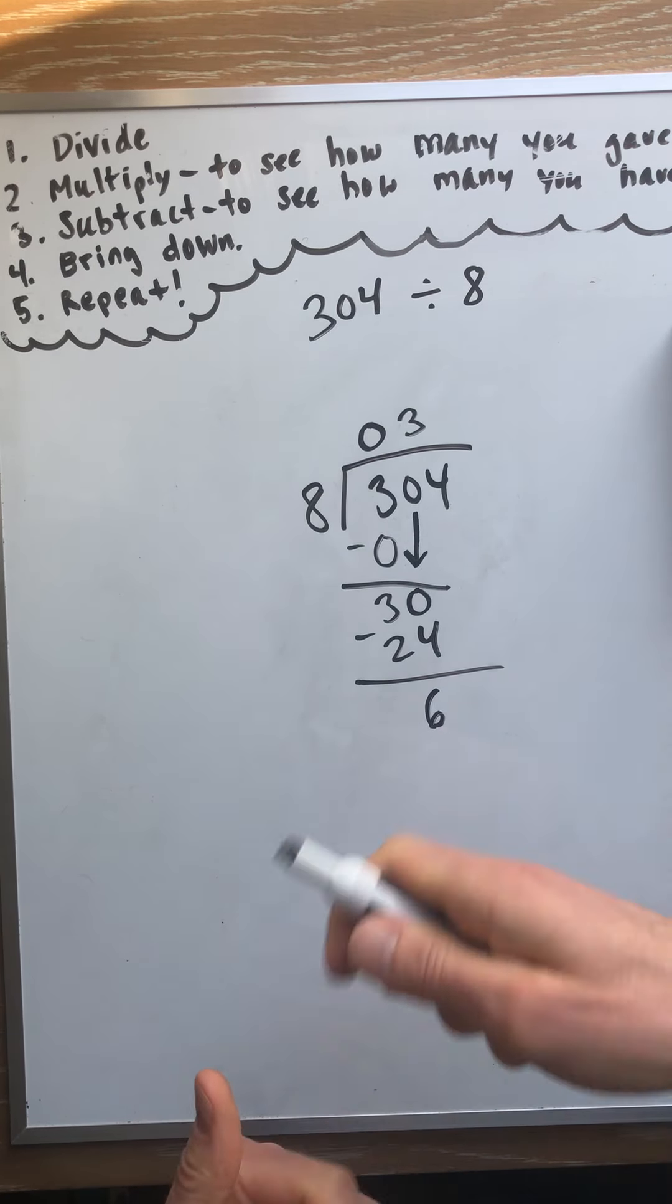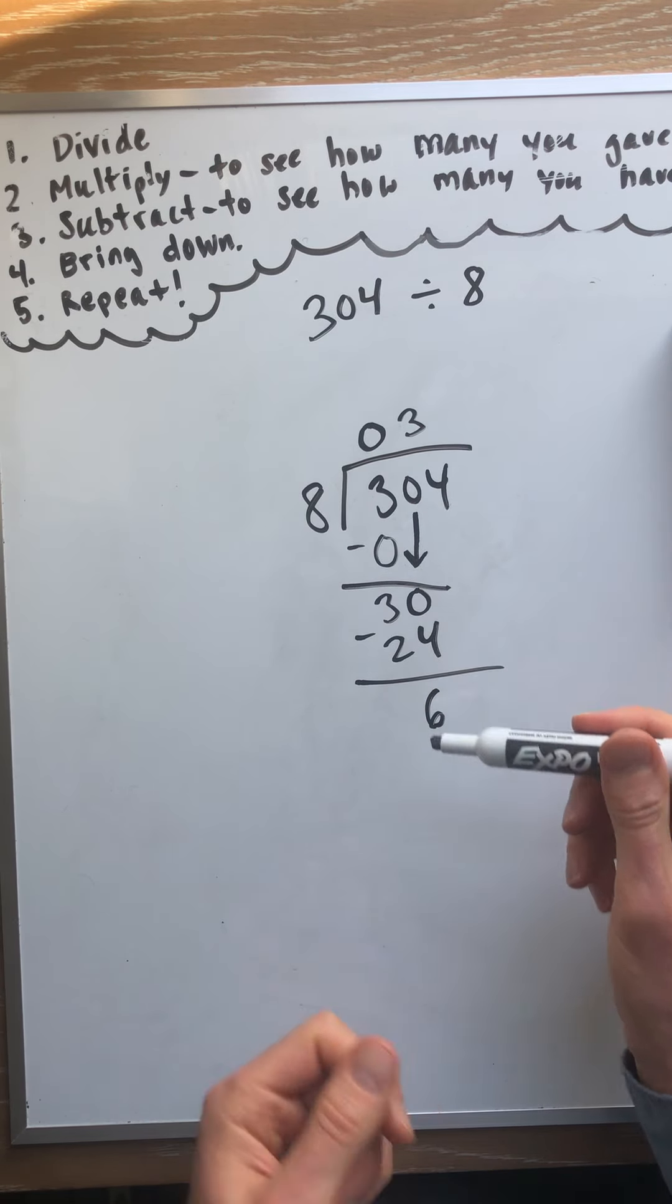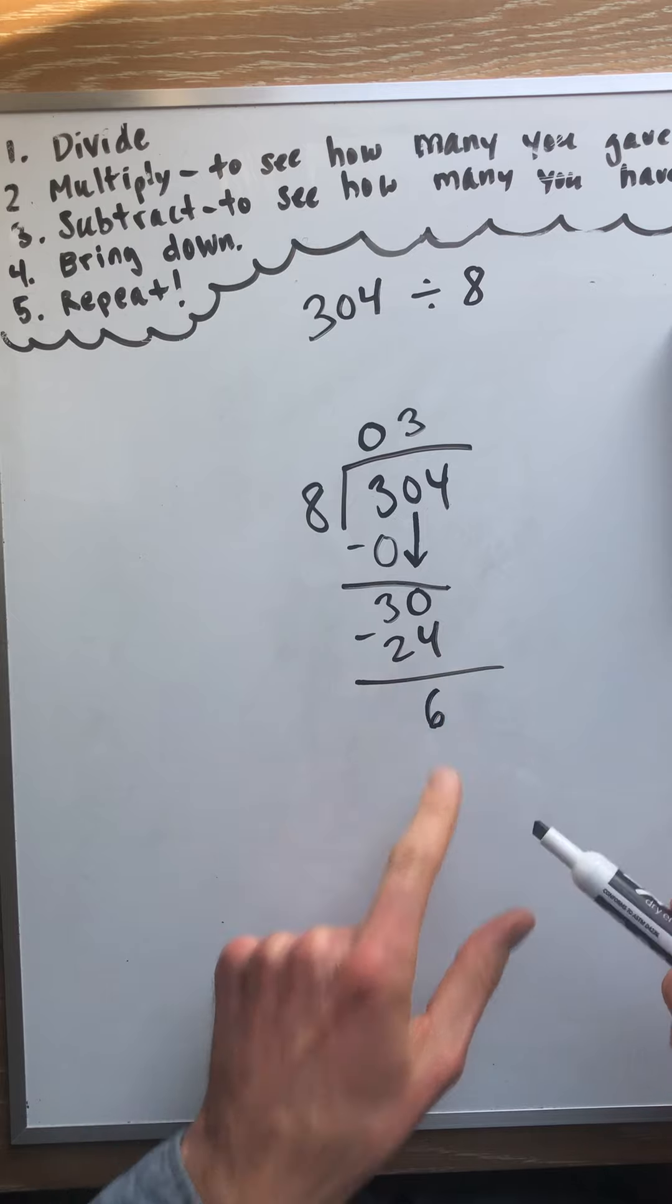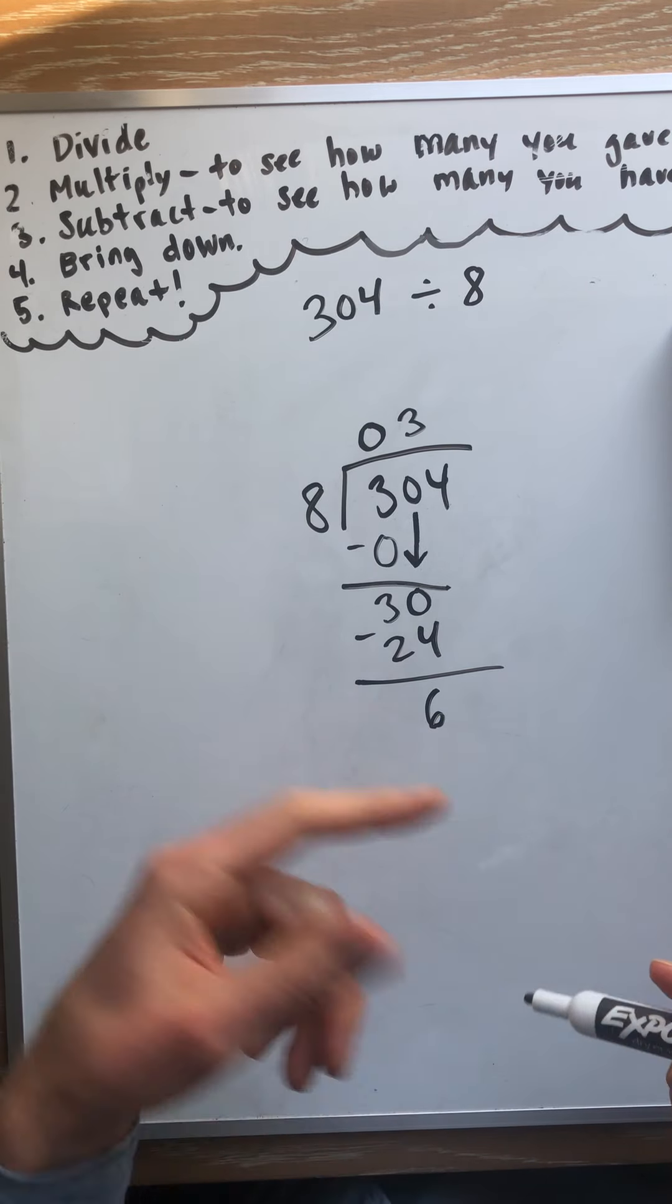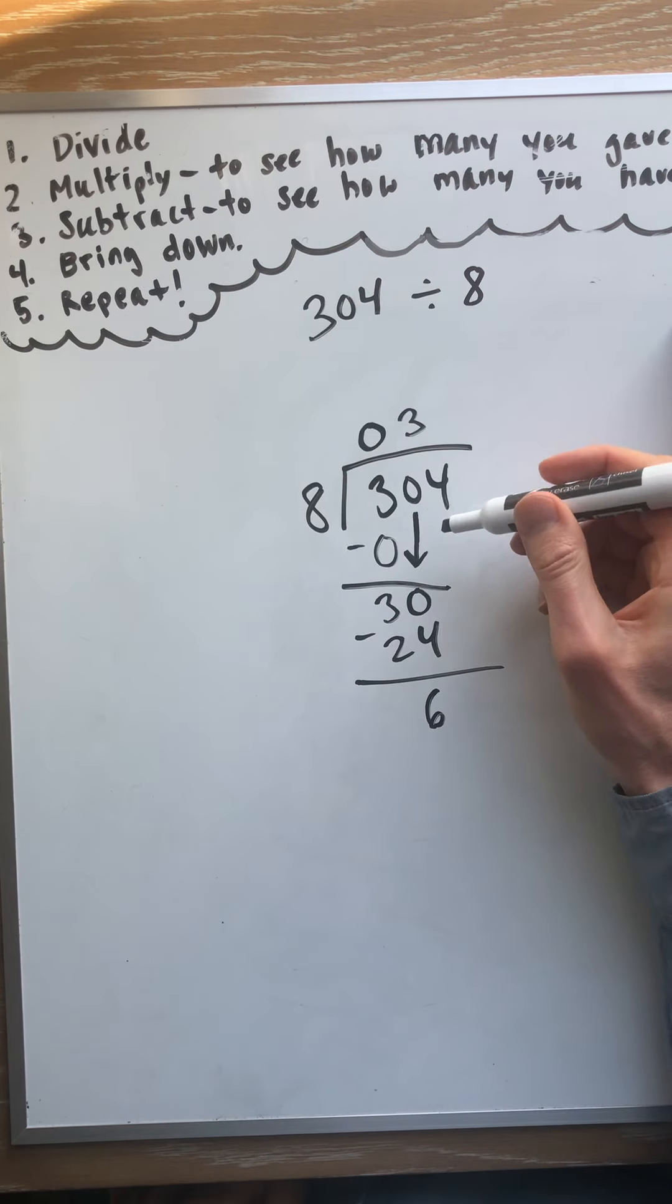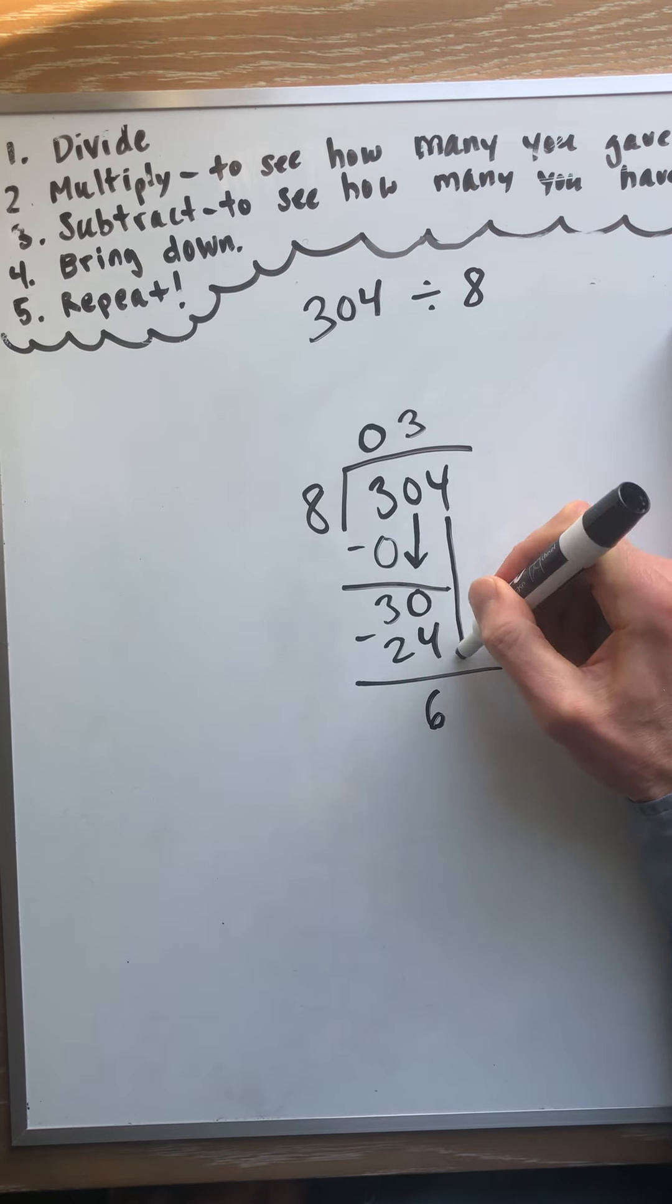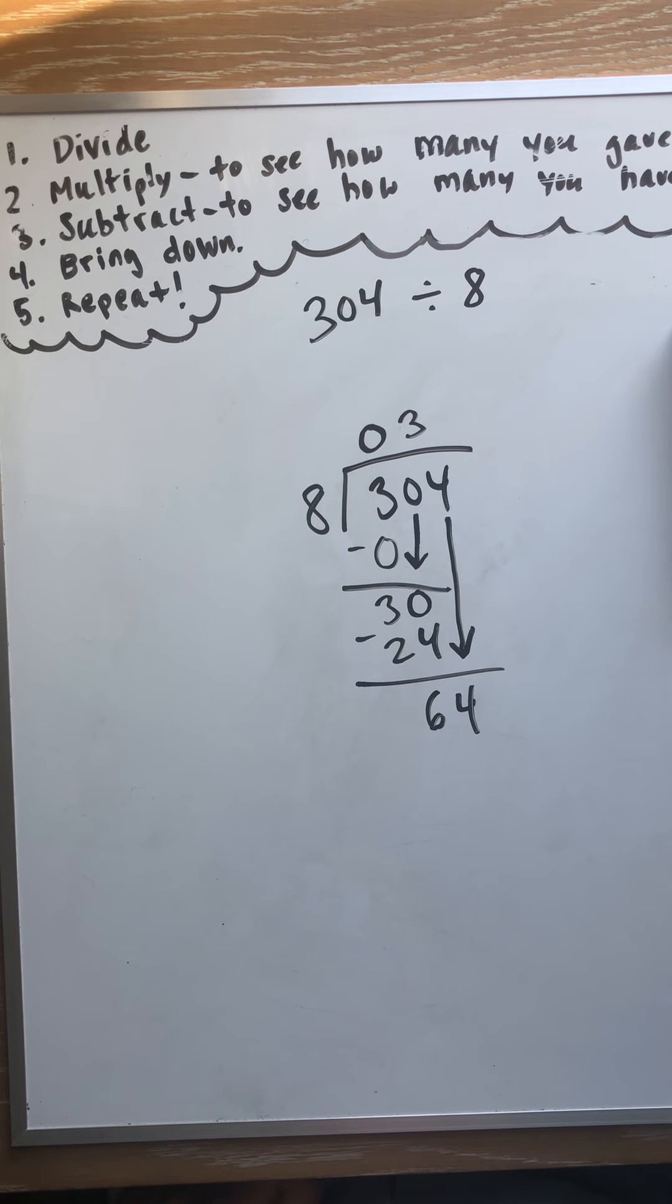And then the person who's giving them all out, who had $304, well, they just gave out 24, but they still have 6 left. So they take those to the bank, take the 6 tens, turn them into 1s, and now we bring them down. It's time to do the 1s. Divide those up. Now we can divide up the 1s.